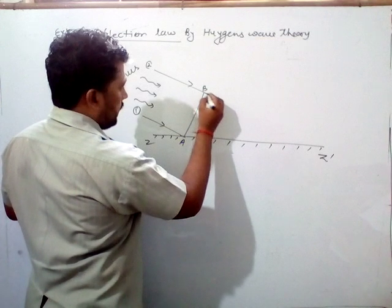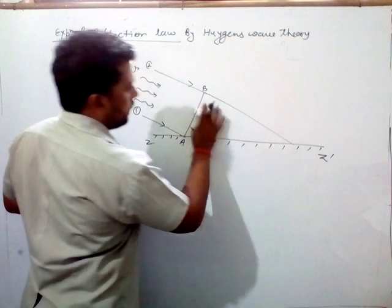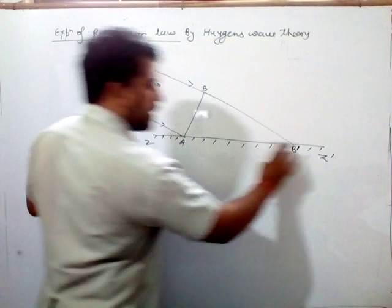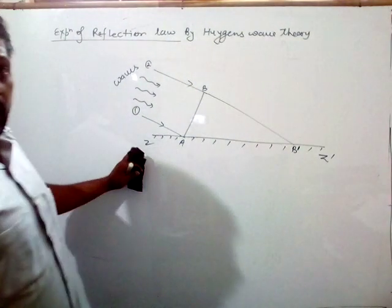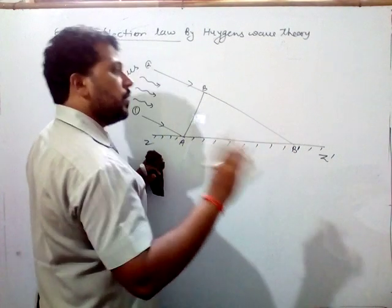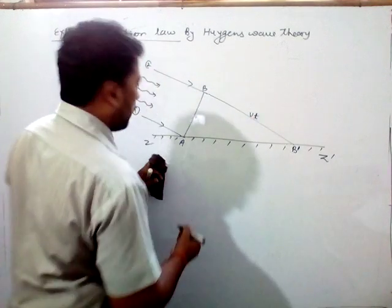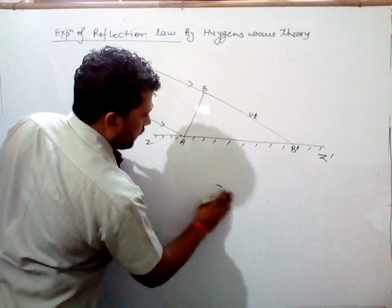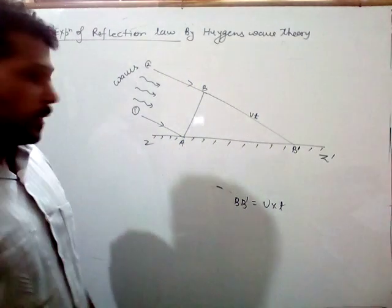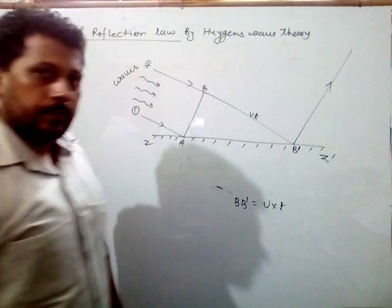Let me consider wave 2 reaches and touches this reflecting surface at point B' in time T with speed V, so VB' equals VT. You know that length equals speed into time. And it gets reflected in this way.